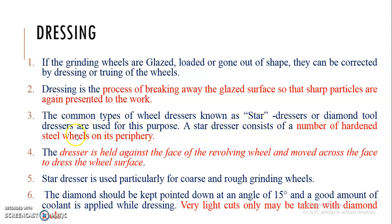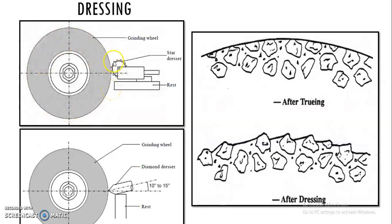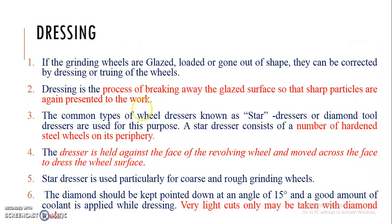The star dresser consists of a number of hardened steel wheels on its periphery, as shown in the sketch. The grinding wheel, which has lost its cutting ability because of glazing and loading, is rotated at high speed and a star dresser or diamond dresser is brought in contact with it. The sharp cutting tips of the star dresser cut the dull glass-like surface around the periphery of the grinding wheel. The dresser is held against the face of the revolving wheel and moved across the face to dress the wheel surface. This star dresser is particularly suited for coarse or rough grinding wheels.